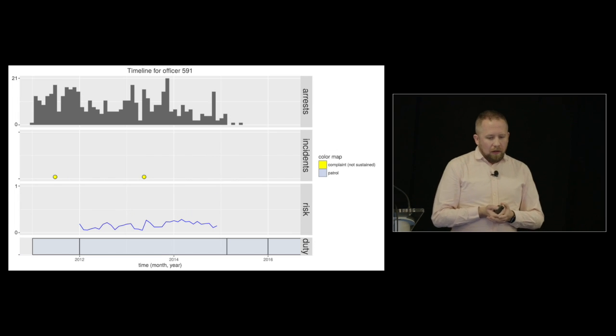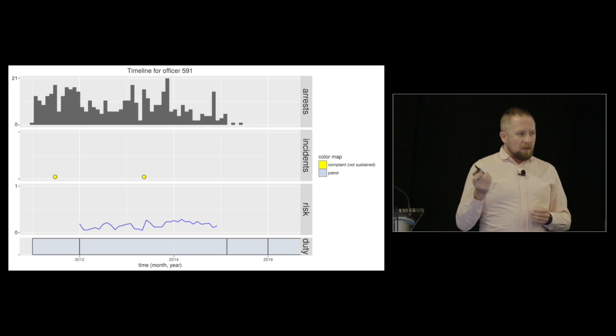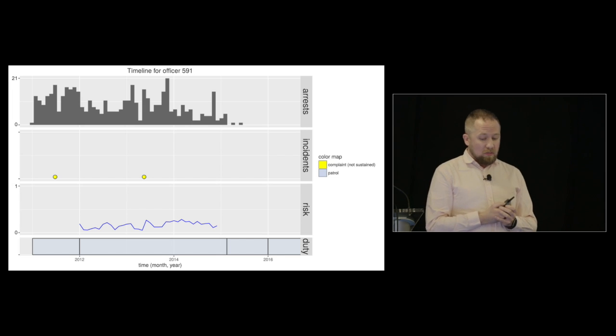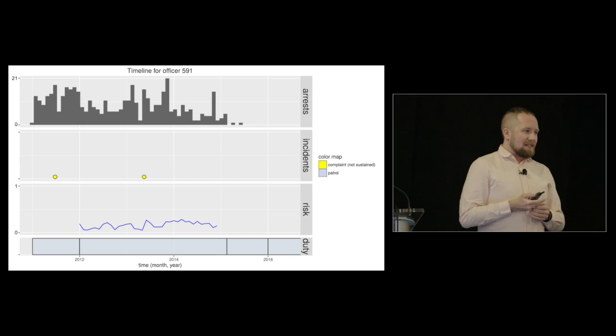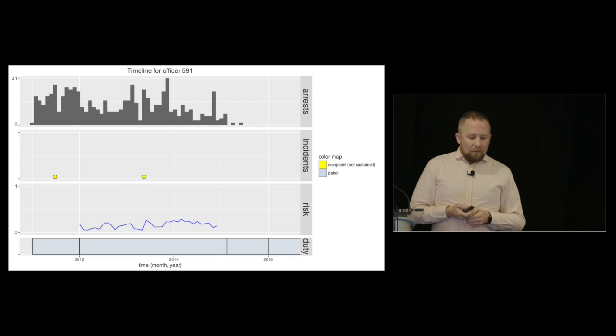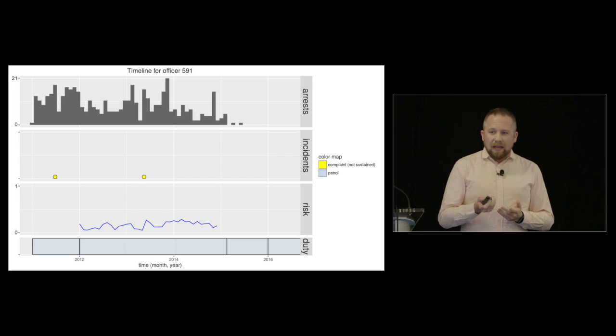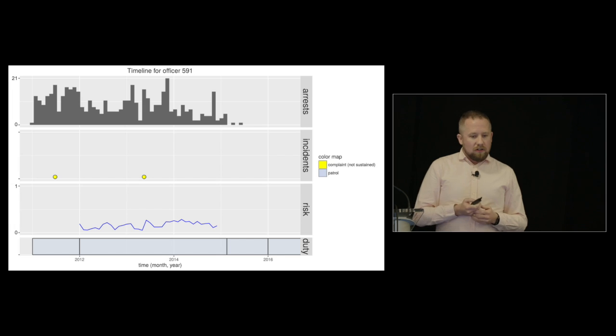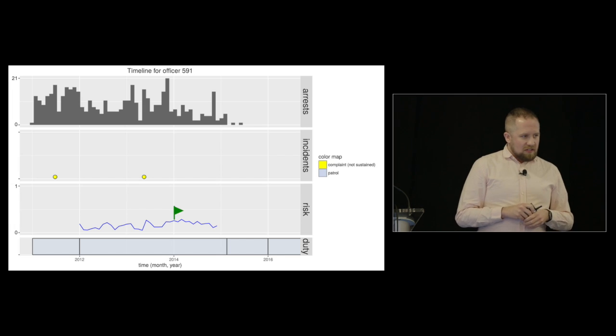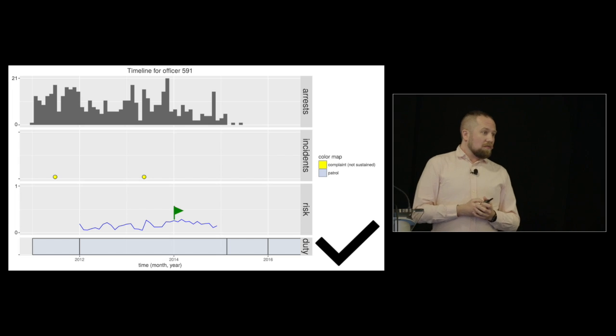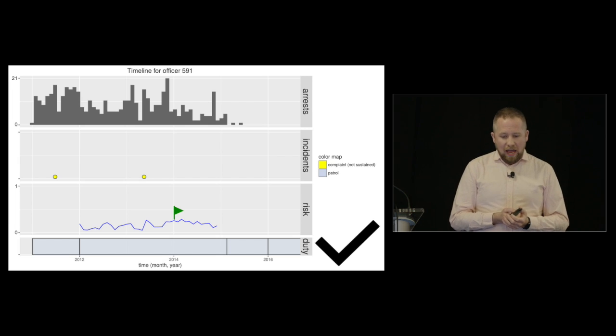Moving on to a different officer, this officer has much less activity. The maximum number of arrests they have in any given month is 21. They only have two complaints against them, and neither of which were sustained. And we can see they have a very low risk score overall. So again, if we pretend that we're on January 1st, 2014, they have a low risk score. We flagged them as not at high risk. And the model, again, got this one right. There were no adverse interactions that happened after this.